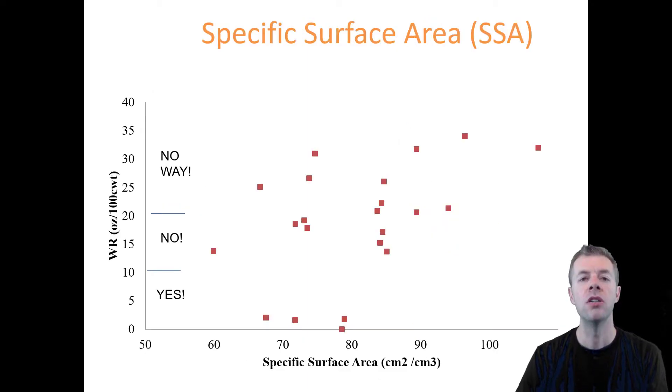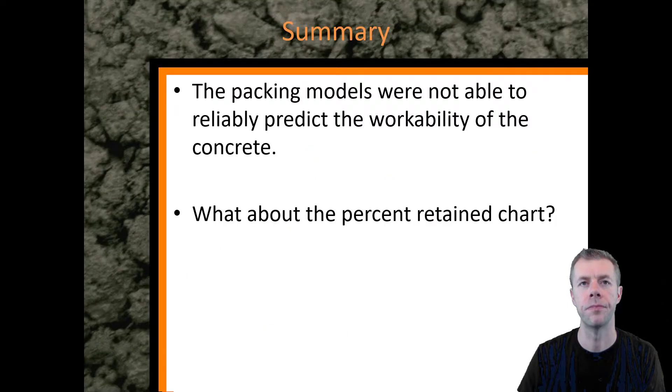We can move on to surface area. Some people think that it's all about the amount of surface area inside the concrete mixture. And they would tell you that if you minimize the surface area, you're going to get improved workability. Now the ones at the lowest surface area here falls in the no category. But I have many in the yes. And I have just as many in the no way and the no. And from the calculation standpoint, there's no difference in a number of these different points. Yet some of them are having great performance, and some of them are having poor performance. Again, this is showing this kind of sometimes it works, sometimes it doesn't. It's not as reliable as we'd like it to be.